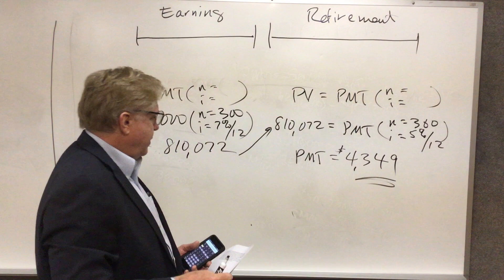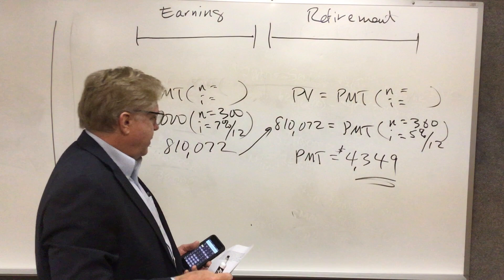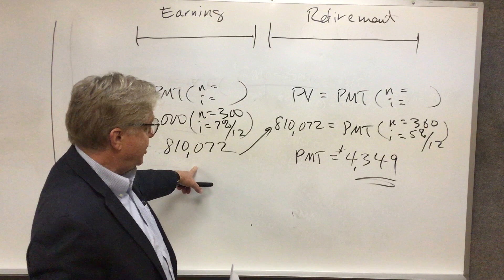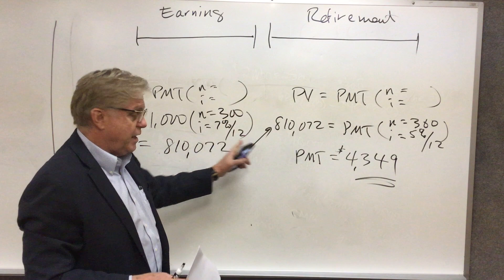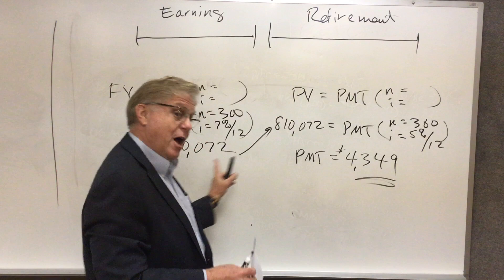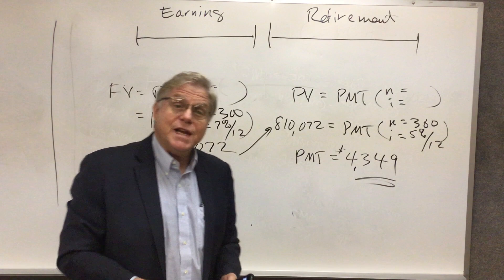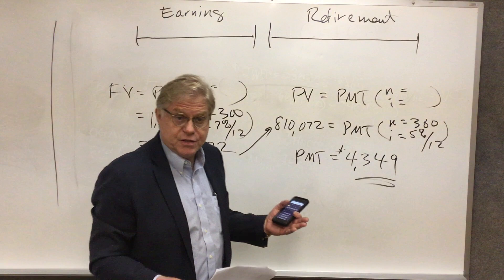So that tells me that if she contributes $1,000 per month for 25 years, 300 periods, and earns 7% compounded monthly, she'll have $810,072 at retirement. That represents the finished product of this part of the calculation, but it represents an input - it's output of this, it's input to this calculation. It's what she starts retirement with. And we solved here and found out that she will be able to withdraw $4,349 at the end of each month for 30 years of retirement. Of course, the way this thing works, remember, there's nothing left at the end of that.